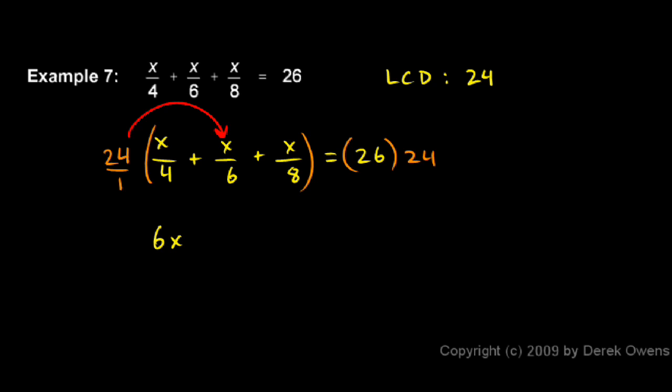Then I multiply 24 times x over 6. In this case, the 24 on top and the 6 on the bottom reduce to a 4, and I still have the x. So I have 4x for my next term. And then I do 24 times x over 8. The 24 over 8 reduces to a 3, and I still have the x. So 3 times that, 3x.